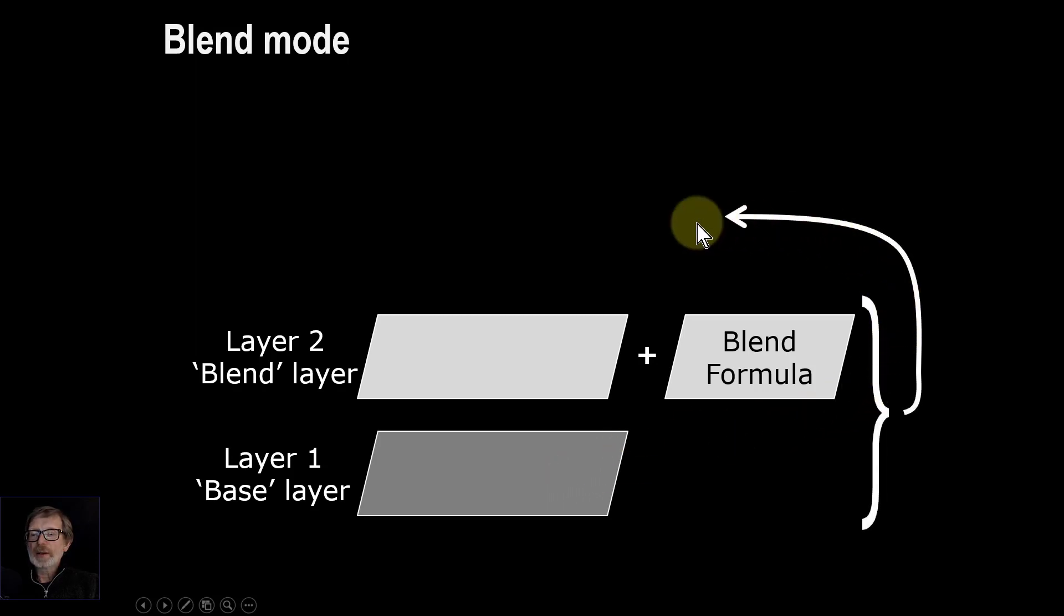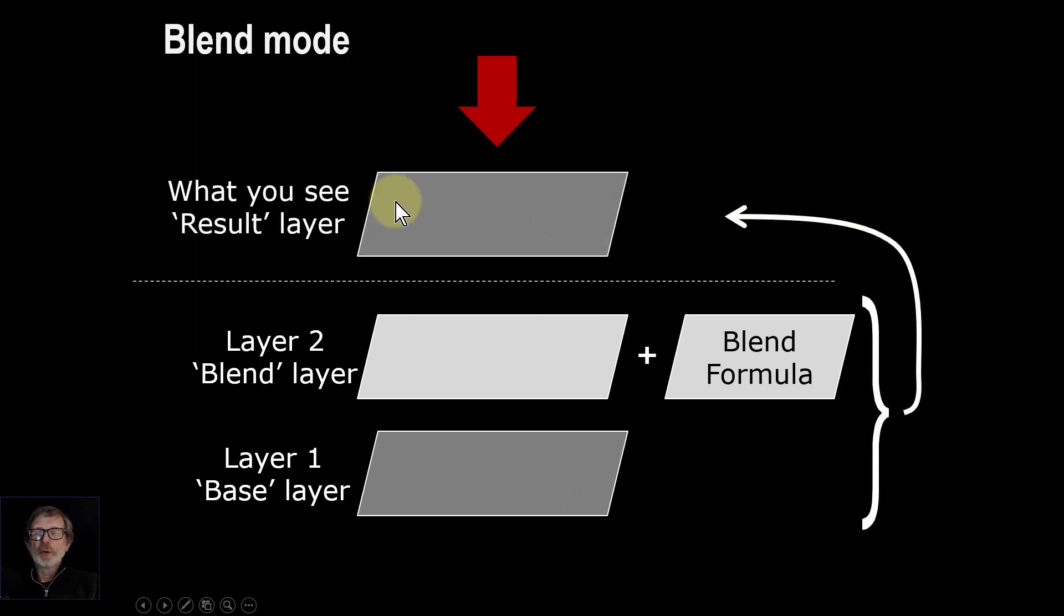They then combine to form what's called a results layer, but there's no actual physical layer in the stack that you can see. You can have still two layers, layer one and then layer two, and what you see at the end is something completely different and that's the result layer. And just to make it a little bit more fun, each of layer one and layer two could have come from a blend in itself.